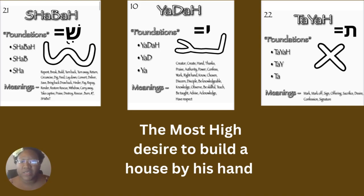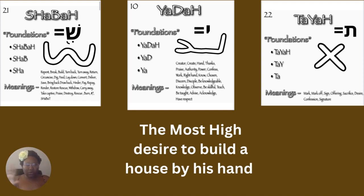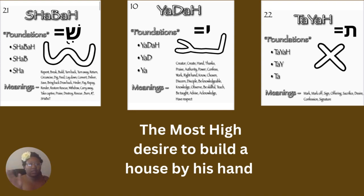'Taya' — it means to mark, mark off, sign, offering, sacrifice, desire, confession, and signal. So this is what I translate for the whole sentence. I said: the most high desire is to build a house by his hand. So he was thinking — it was nothing, it was him and nothing. He was thinking, maybe I should build a house.